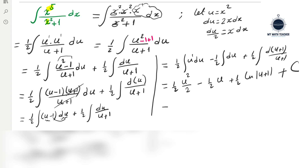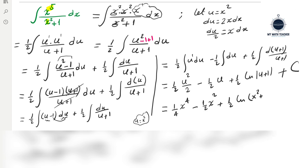Now let's substitute back u equal x squared. We get one quarter x to the power 4, minus one half x squared, plus one half natural logarithm of x squared plus 1. No absolute value is needed since x squared plus 1 is always positive. Plus constant — and this is the final answer. If you want to improve your math, just like and subscribe. Thank you for watching.